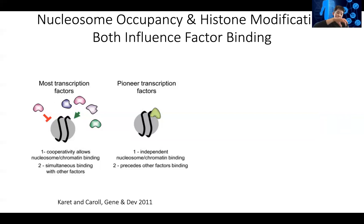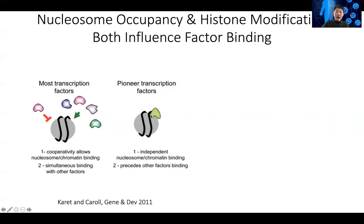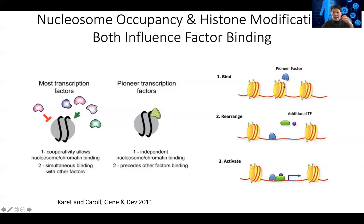One exception is if you have multiple transcription factors that form a complex, each with some DNA specificity. By working together cooperatively, they can squeeze out the nucleosome and kick the bead out of the string. There are also some transcription factors called pioneering factors, which sometimes even prefer to bind to nucleosomal DNA regions. Once they go there, they can kick out the nucleosome and help additional transcription factors bind to this region, helping transcription of nearby genes.